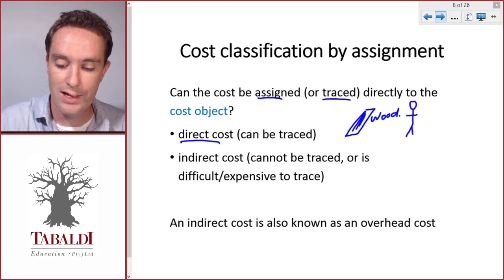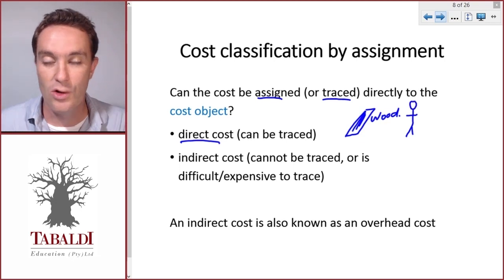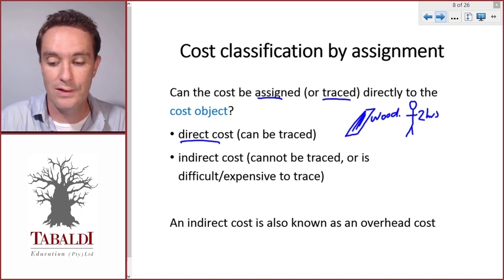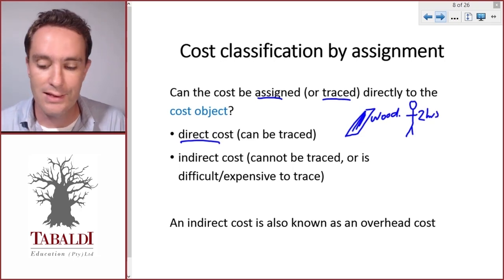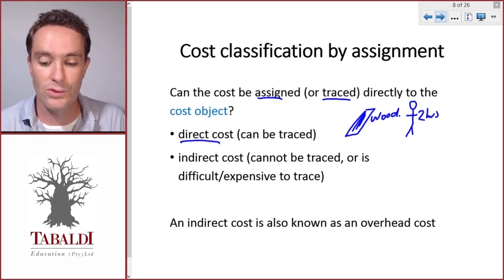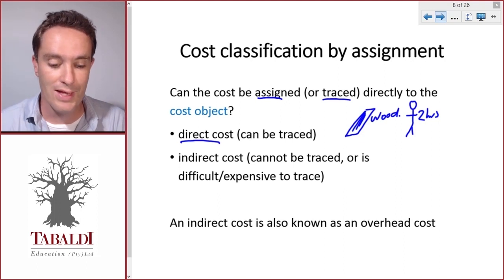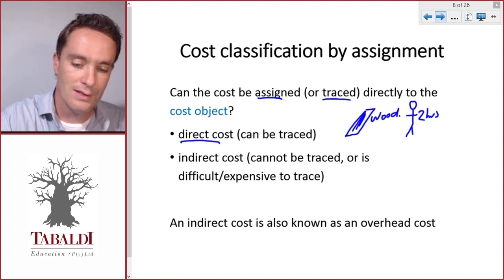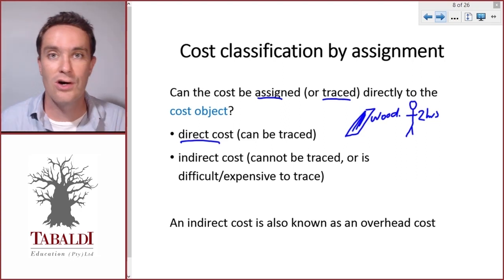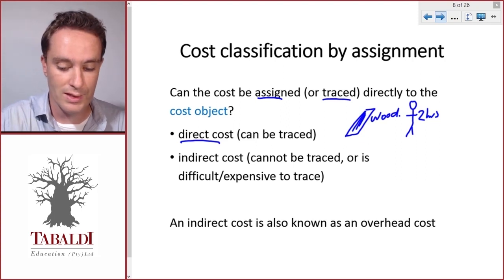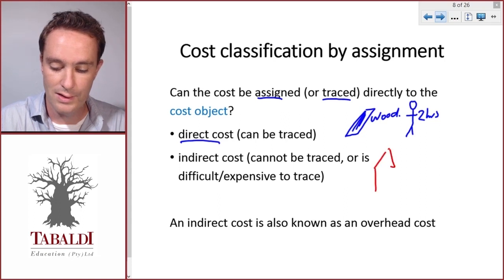Another example is our carpenter or handyman John, who made the tables. We pay him per hour, so if he worked two hours we can multiply that by his hourly rate and attach that cost to the cost object, the table. So that's also a direct cost.